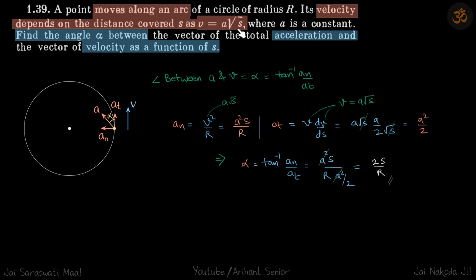Velocity is given in terms of s, so let's find aₙ and aₜ. aₙ = v²/R = a²s/R. We put the value of v = a√s here, so we got this.